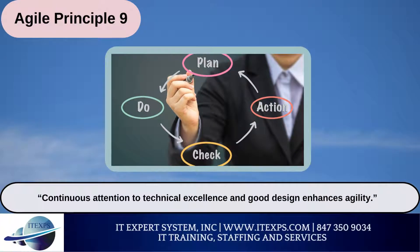Agile Principle 9: Continuous attention to technical excellence and good design enhances agility. While the agile philosophy encourages shorter cycles and frequent releases, it also emphasizes keeping things neat and tidy so they don't cause problems in the future. In practice, the team needs to be cognizant of technical debt and the implications of any new features or initiatives added to the backlog. Developers and product need to work together to understand if and when technical debt is acceptable. On a regular basis, product will need to allocate development resources to refactoring efforts — refactoring cannot be an afterthought; it needs to be an ongoing consideration.